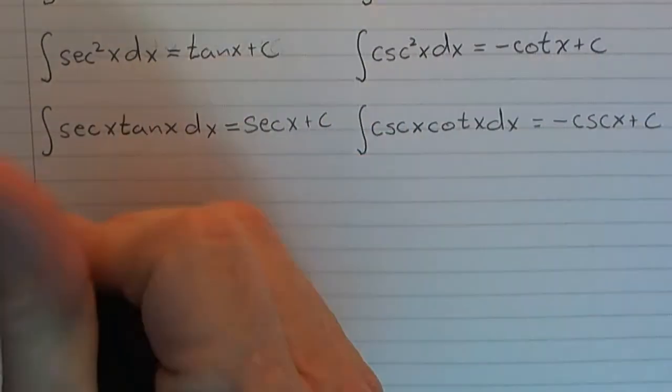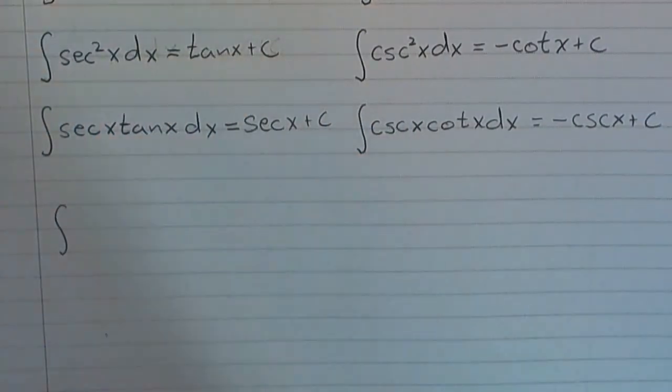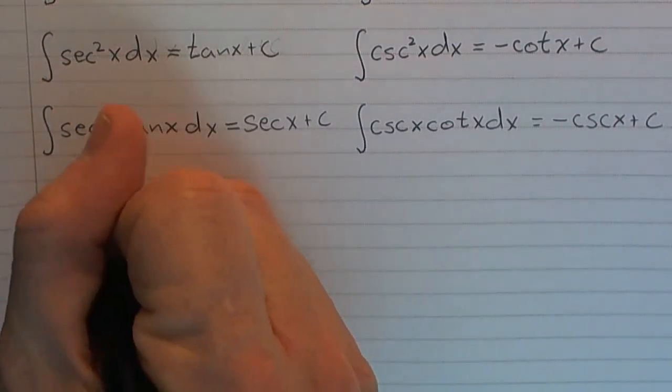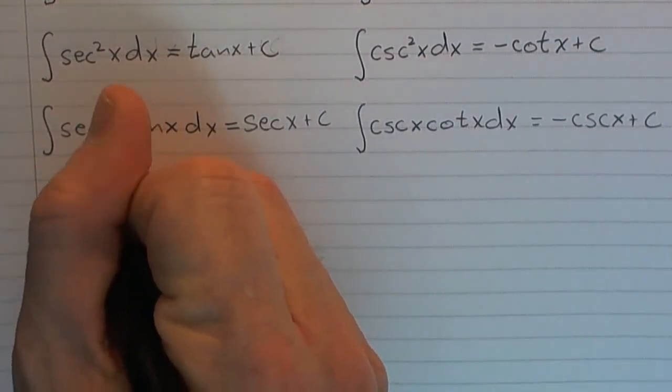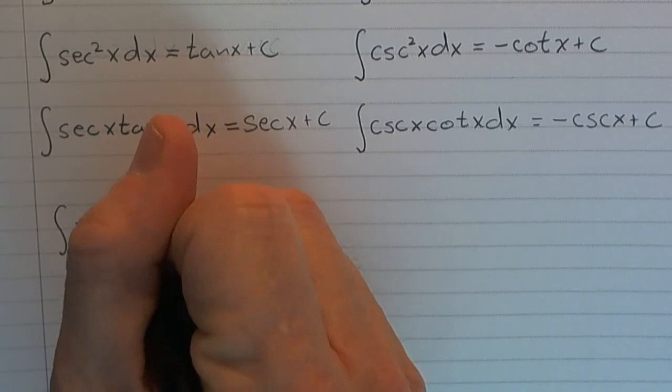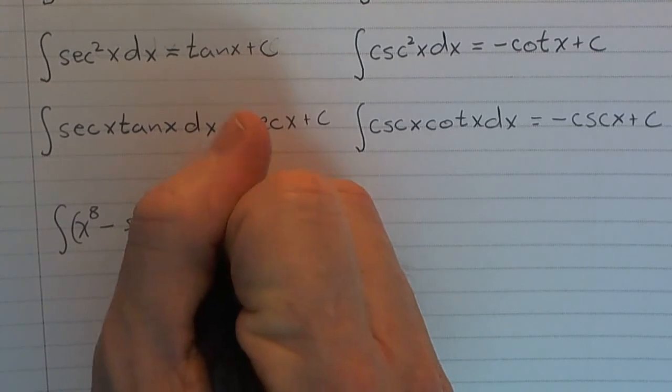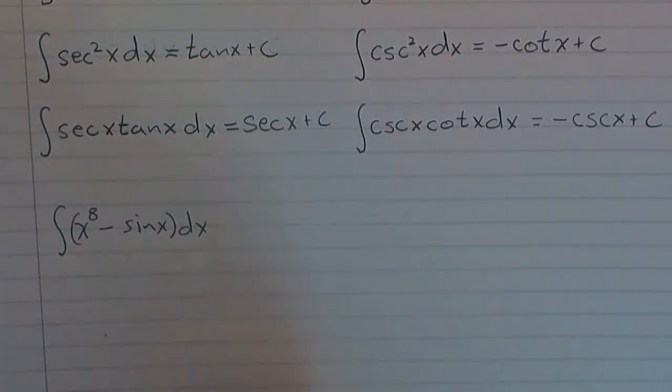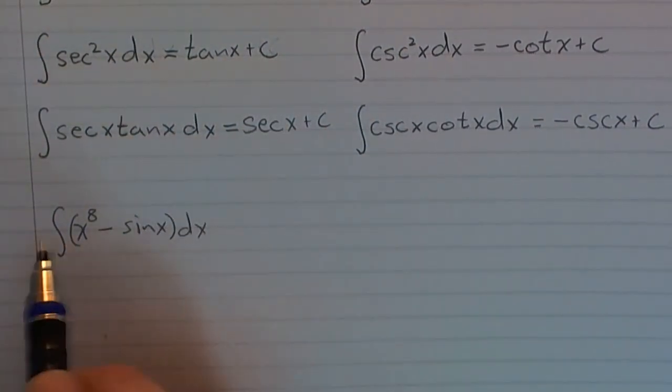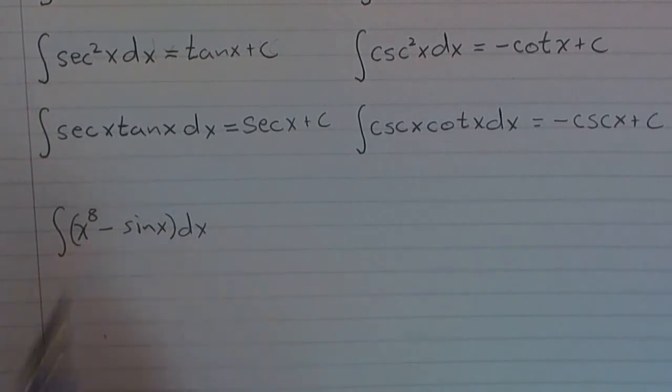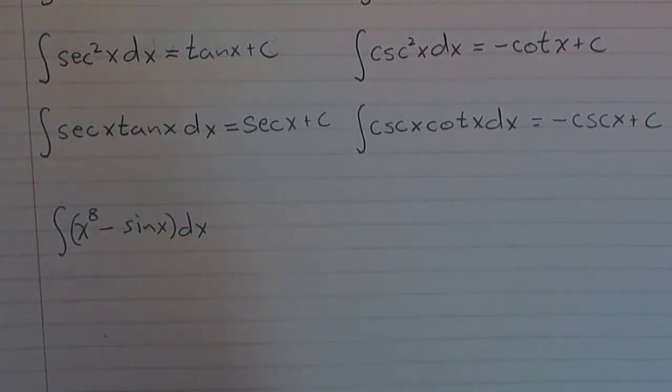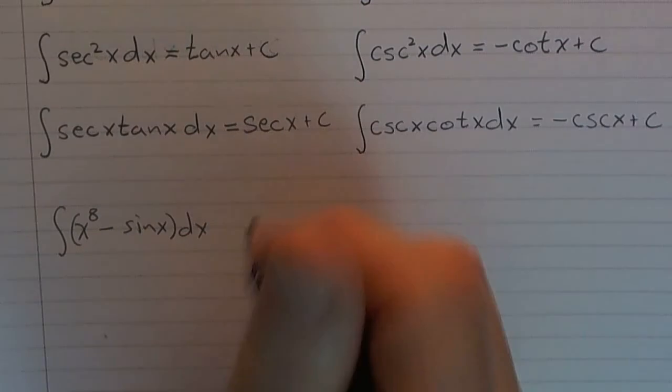So let's see how we might see a problem or an antiderivative. Maybe we'll have something like x to the eighth minus, let's say, sin x. Something like that. And we just want to go term by term, just like we would differentiate term by term. We're going to find the antiderivative term by term.